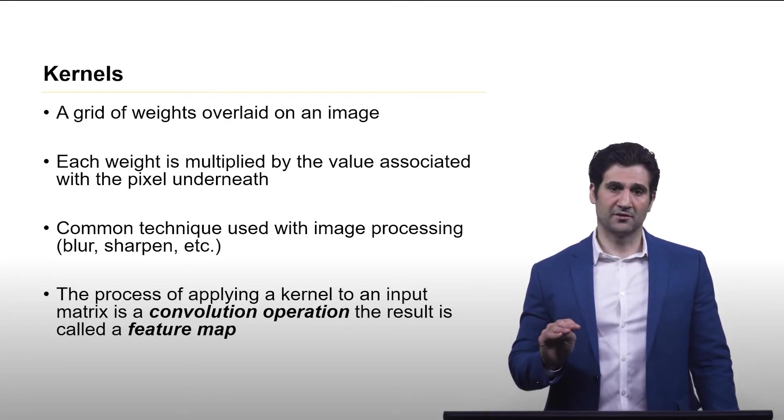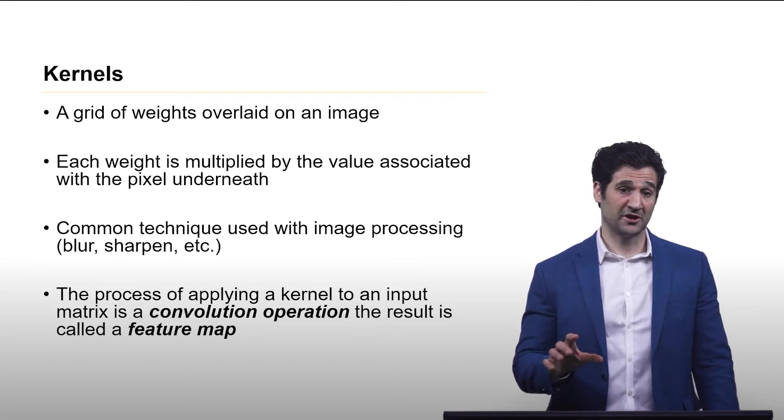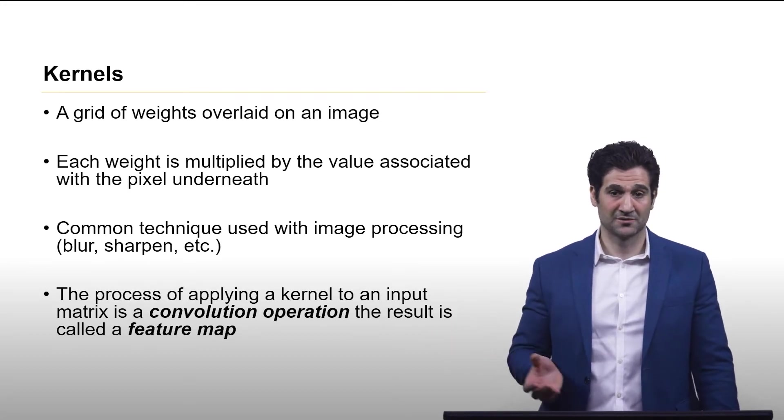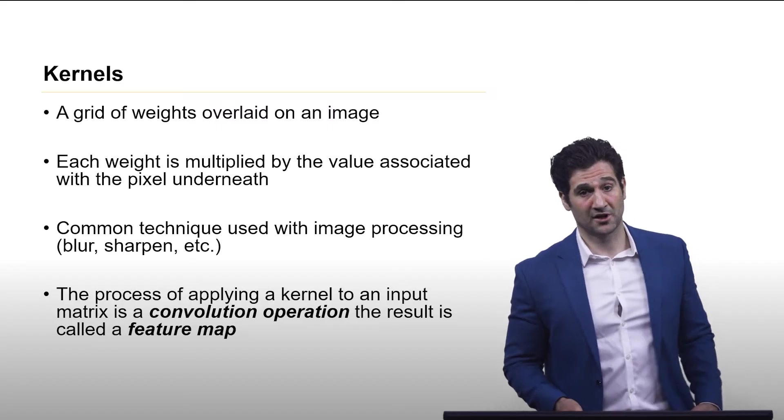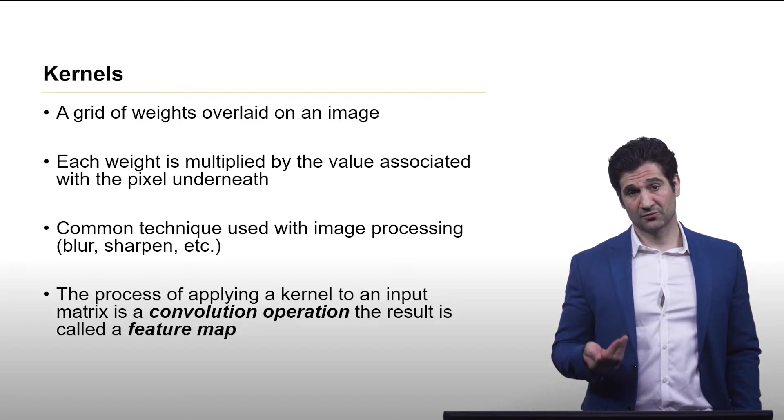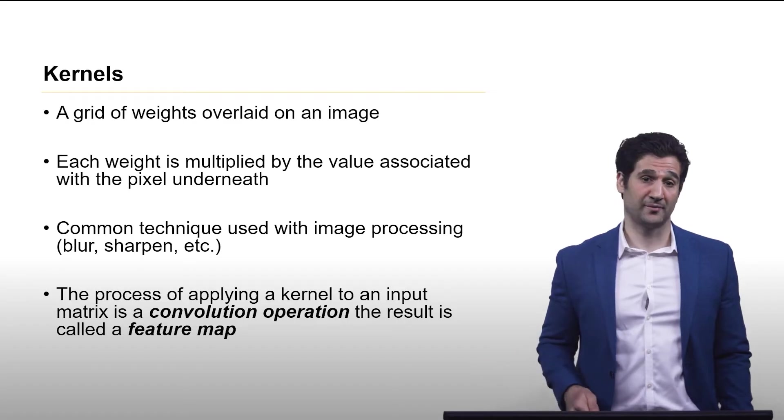The process of applying a kernel to an input matrix or a set of pixels, an image, is called the convolution operation. And the result of the convolution operation is called the feature map.